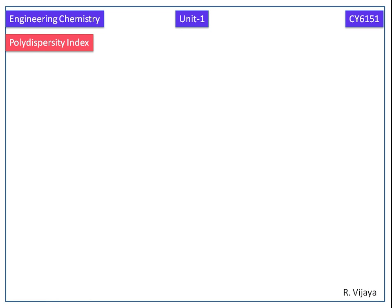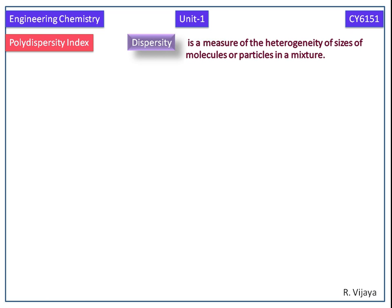Now we see polydispersity index. For this we should know dispersity. Dispersity is the measure of the heterogeneity of sizes of molecules or particles in a mixture.